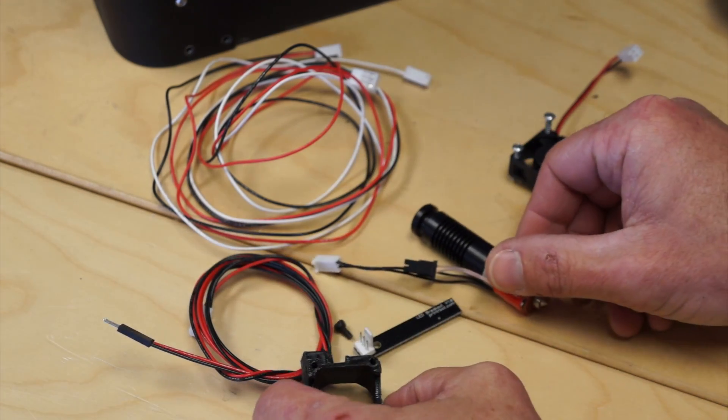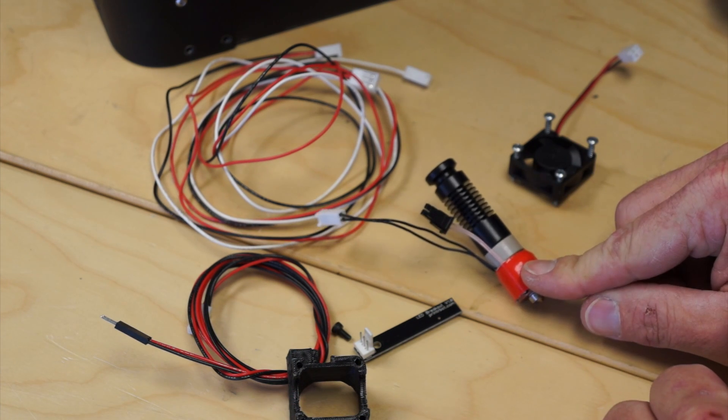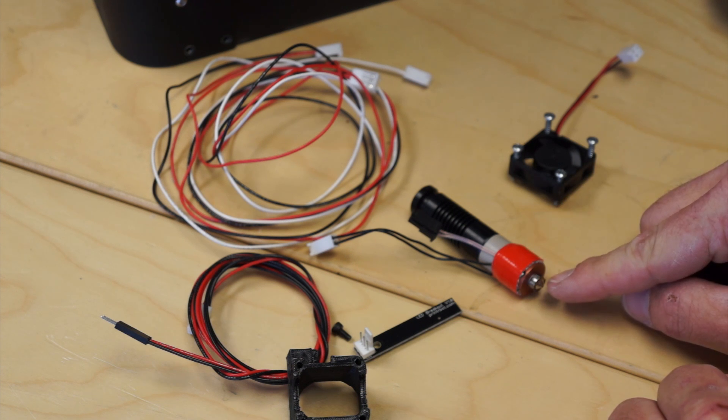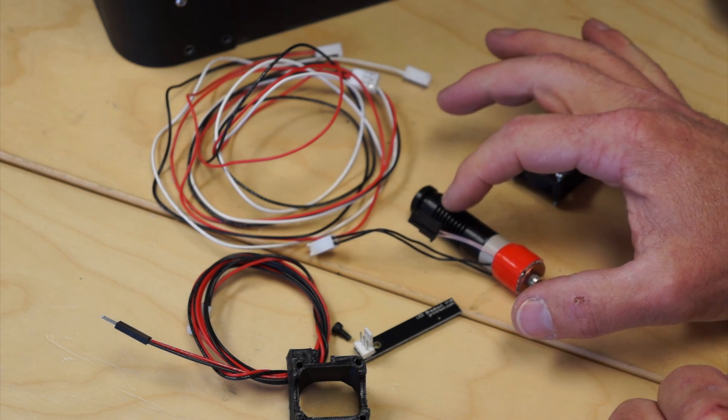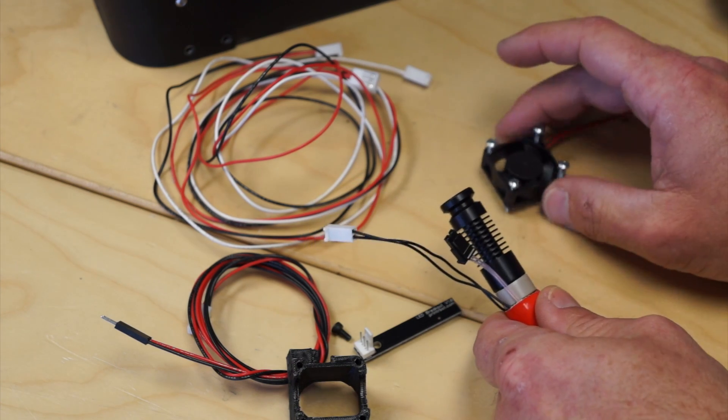Now, if you have a ceramic, the UBIS-13S can and should replace it. It's a more exact hot end. You can get different tips for it. It has a cooling heat sink that needs a fan, so I'm going to show you how to put that together.